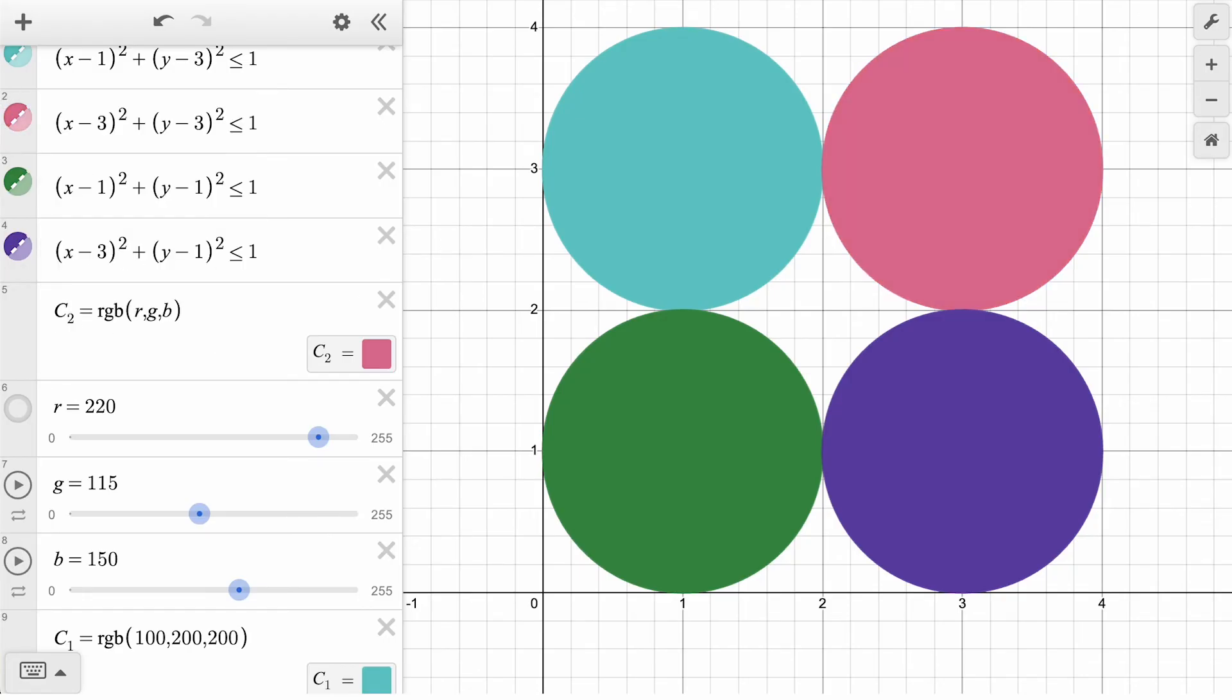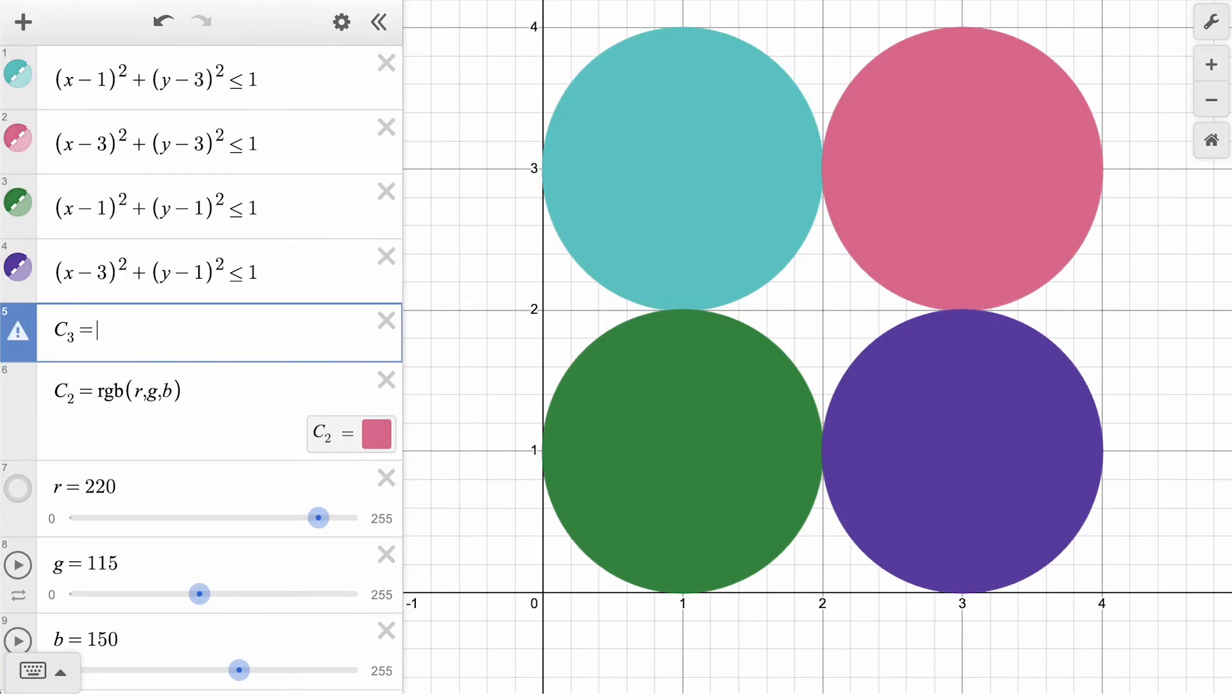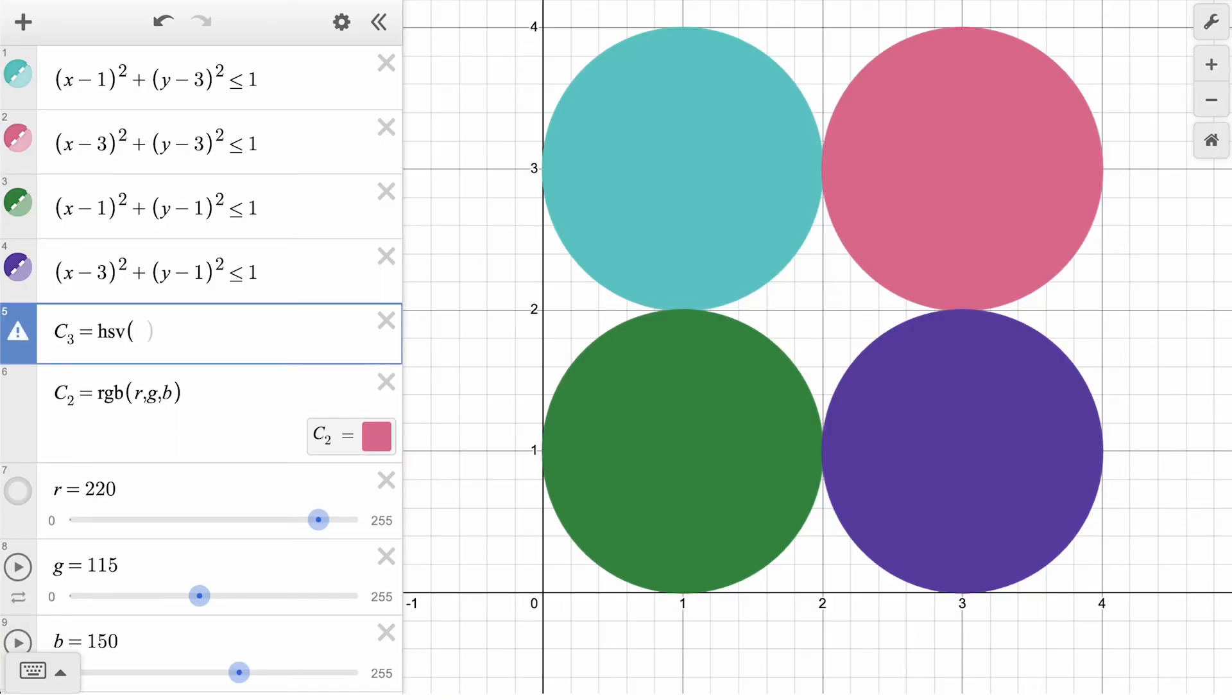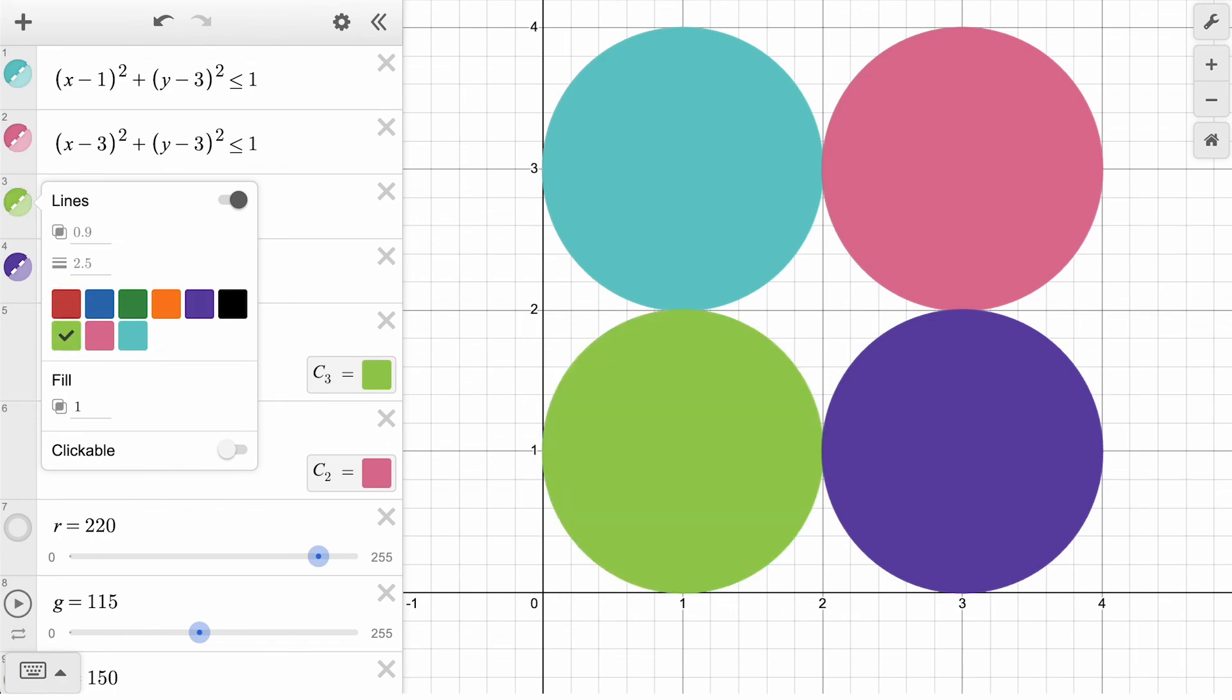For our third color, let's try using HSV. Very similar to the format of RGB, we will define C3 to be equal to HSV of three numbers. Let's say 85, 0.6, 0.8. That is, a hue of 85, a saturation of 0.6 or 60%, and a value of 0.8 or 80%. We will set the bottom left circle to this color.